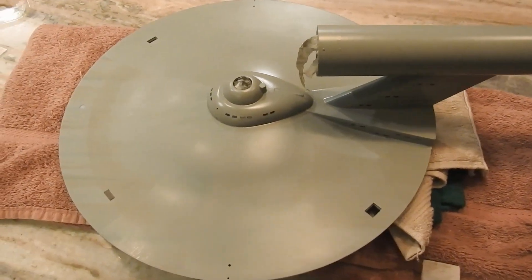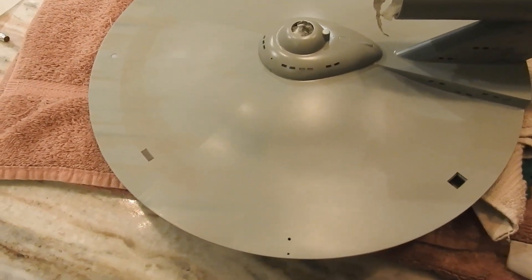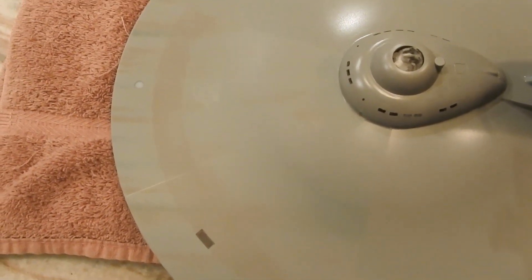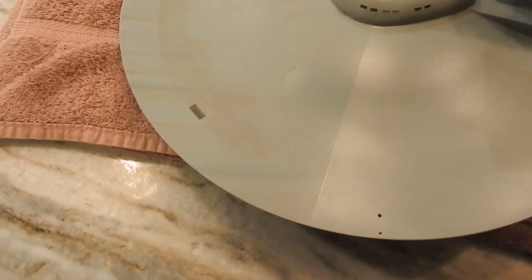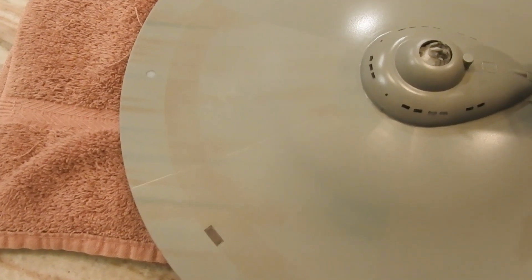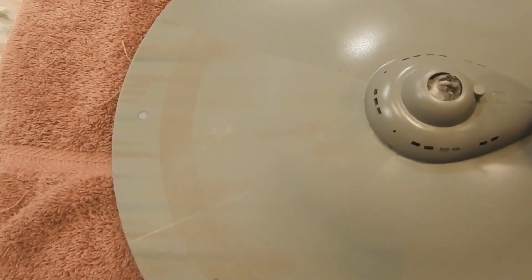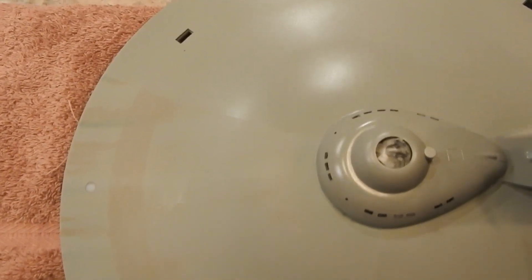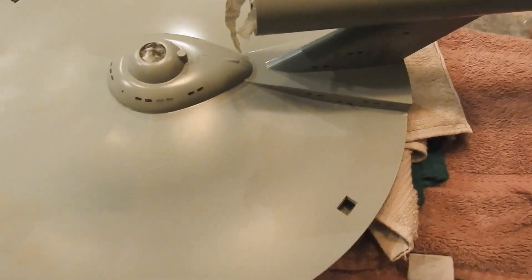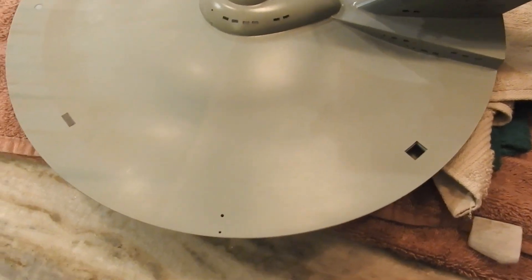Now I'm applying the decals. I got the bottom of the saucer done, flipped it over, and now I'm working on the top. I think I got like three wedges done on the top here, just slowly working around.